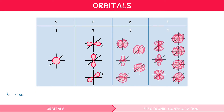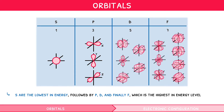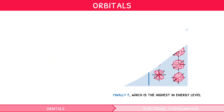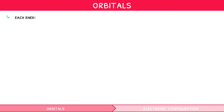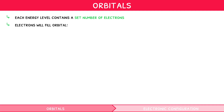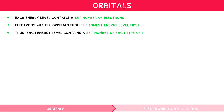S orbitals are the lowest in energy, followed by P, then D, and finally F, which is the highest energy level. As previously mentioned, each energy level contains a set number of electrons, and electrons will fill orbitals from the lowest energy level first. Thus, each energy level contains a set number of each type of orbital.